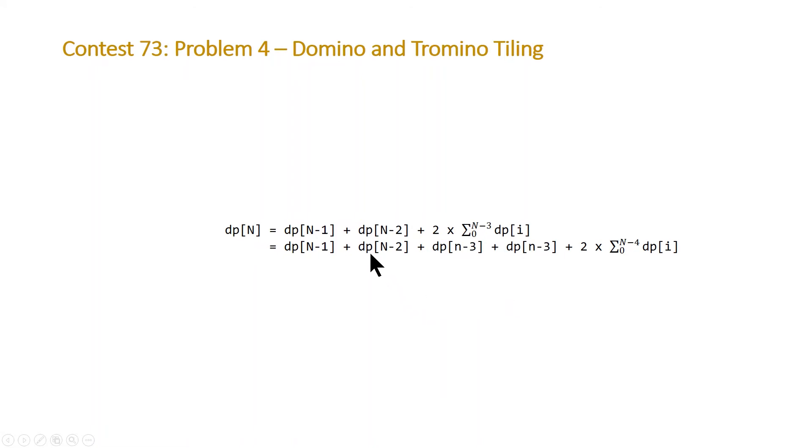Then we can move our n minus 2 over to swap this n minus 2 with this n minus 3. And what we'll notice here is the remainder of this equation is just equal to dp n minus 1.